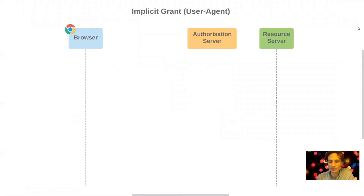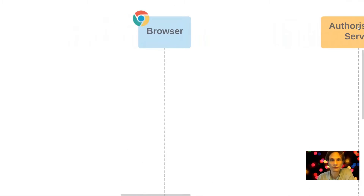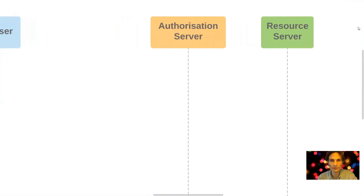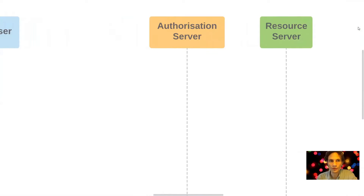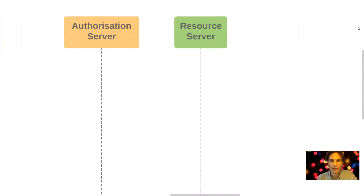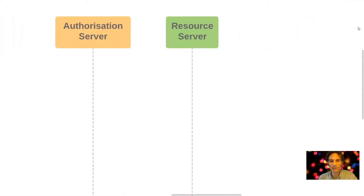There are three system actors involved in the flow: the browser that the user is using and is acting on behalf of the client; the authorization server, which is the application the user is actually logging into and authorizing through; and the resource server, which is the application that the client browser will be integrating with.